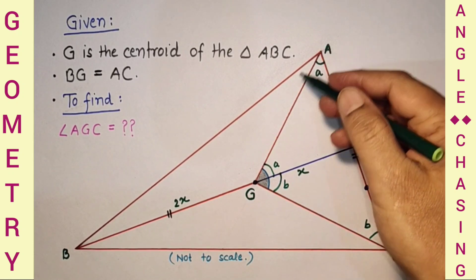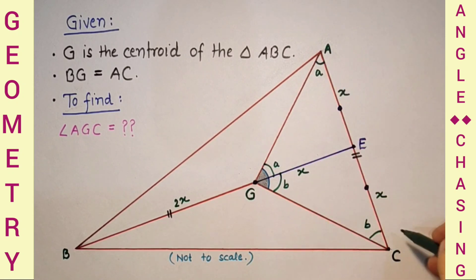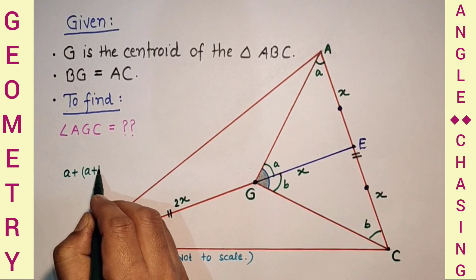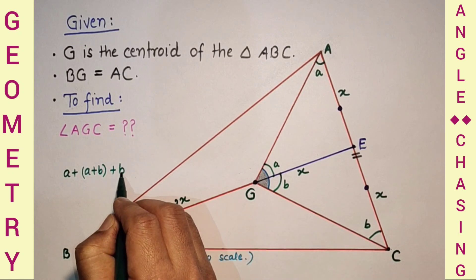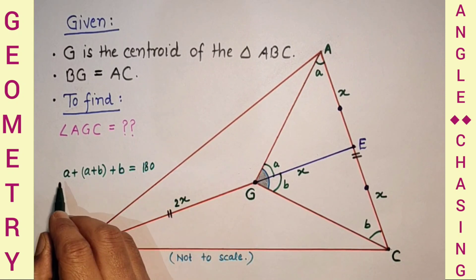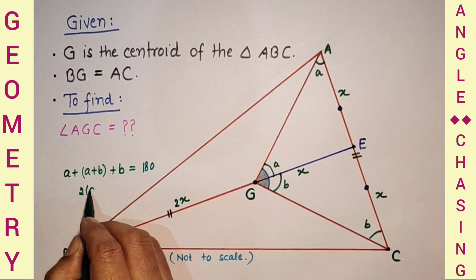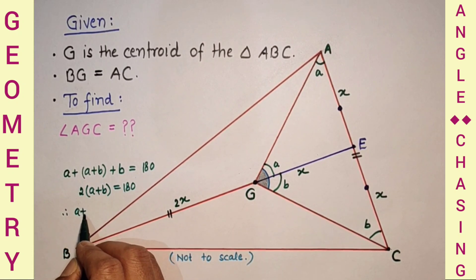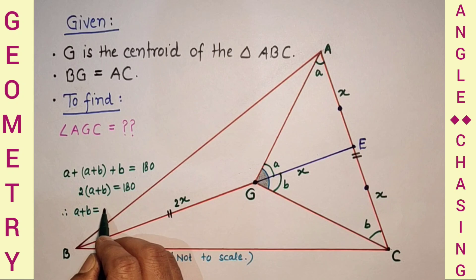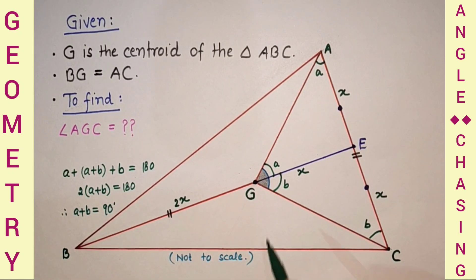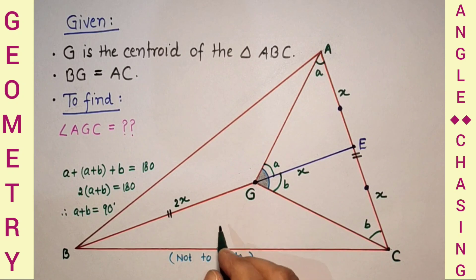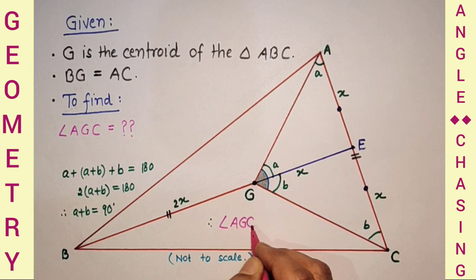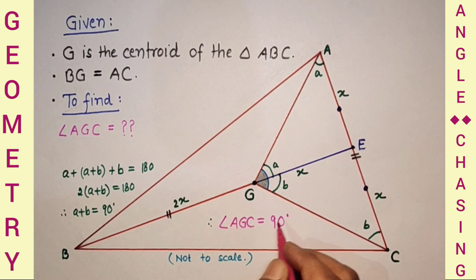Now for triangle AGC, the sum of the three angles will be 180 degrees. That gives us A plus A plus B plus B equals 180, so 2A plus 2B equals 180, meaning 2 times (A plus B) equals 180, and therefore A plus B equals 90 degrees. This angle A plus B is the required angle AGC. Therefore, angle AGC equals 90 degrees, and this is the required answer.